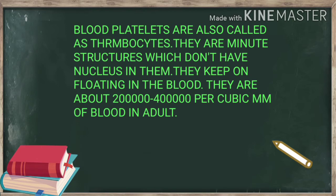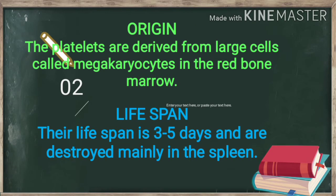In adult humans, these blood platelets are derived from large cells called megakaryocytes in the red bone marrow. They are budded off from the megakaryocytes in a manner that each one is completely surrounded with the membrane. Their lifespan is three to five days.